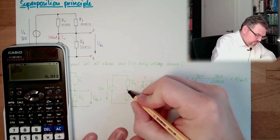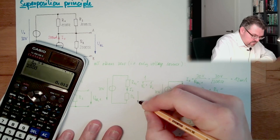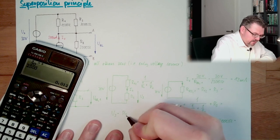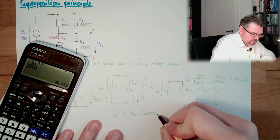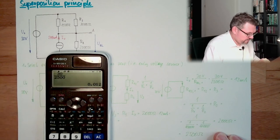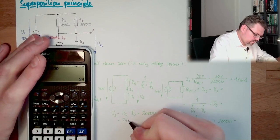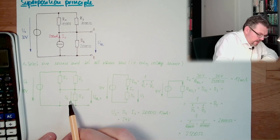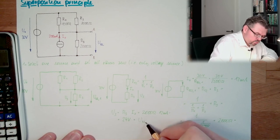This current Ix is also here. Here is Ix. And here we have U3. And U3 is R3 multiplied by Ix. So this is 2,000 ohms multiplied by 12 milliamps. 24 volts. Here is U3.